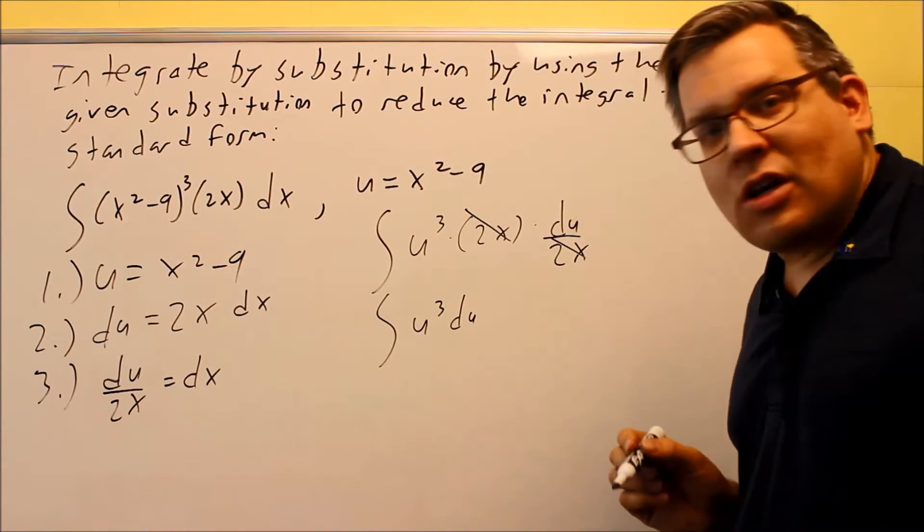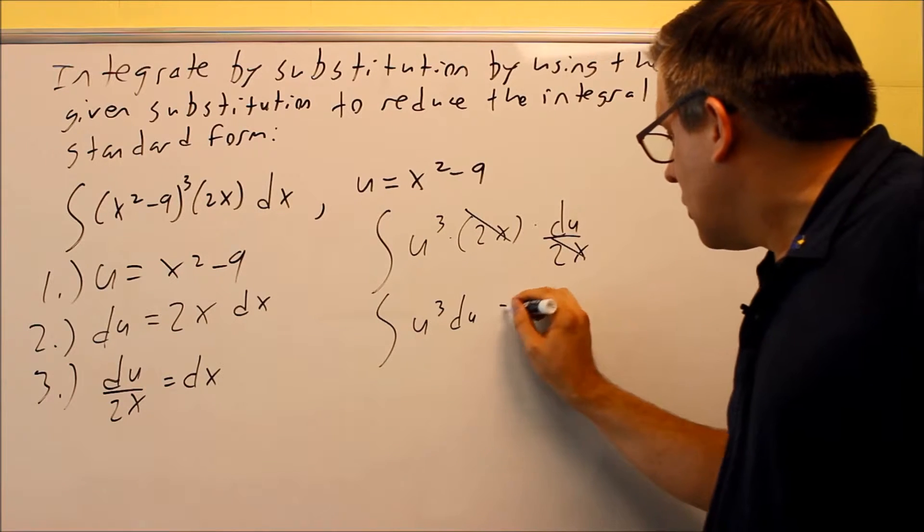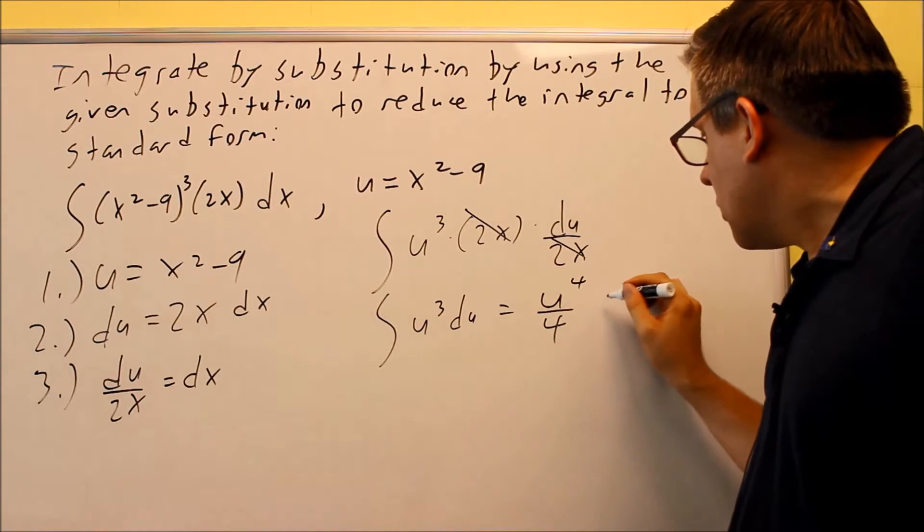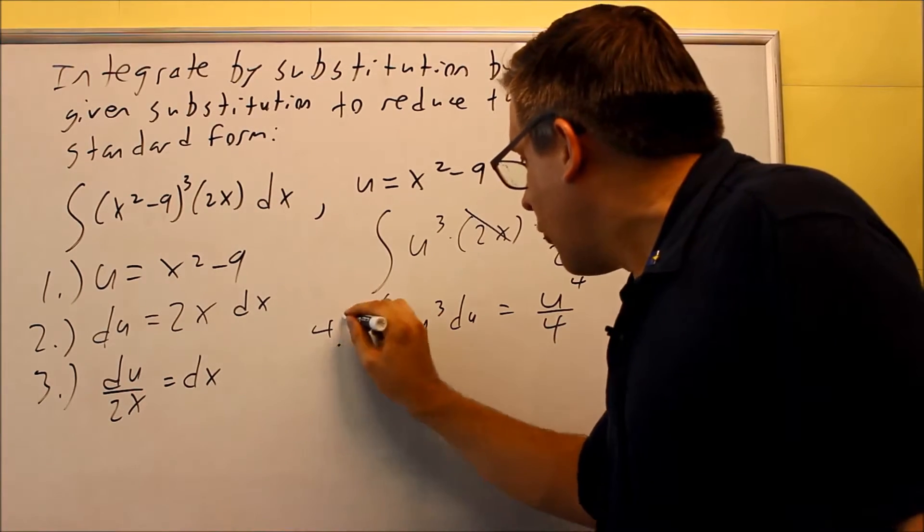Everything all is in terms of u. So we're just going to take the anti-derivative of this, u to the 4th over 4, and then plus c.